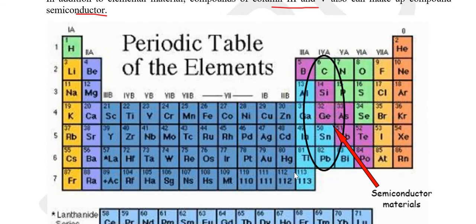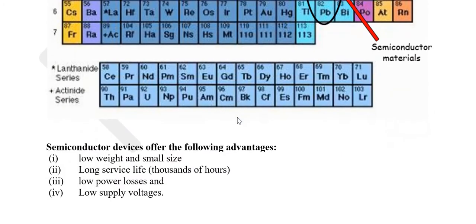This is the periodic table and this represents the elemental semiconductors. Silicon and germanium are the widely used semiconductors. The nearby elements like aluminium, phosphorus, gallium, and arsenic make the compound semiconductors.